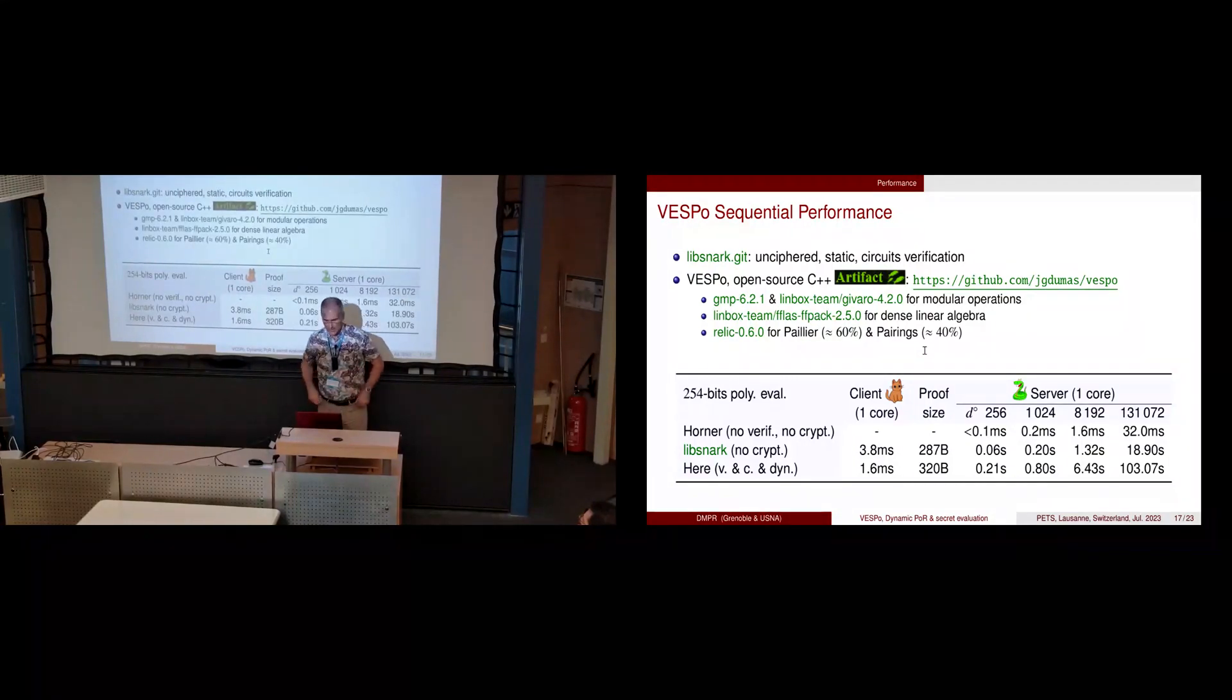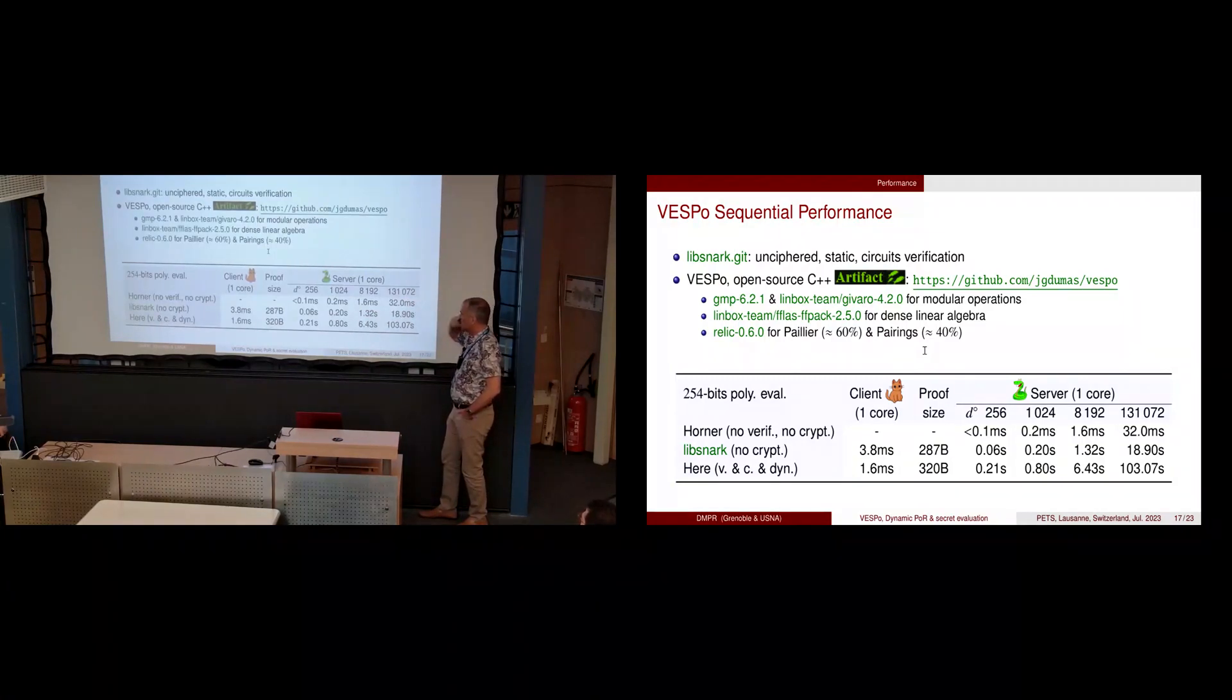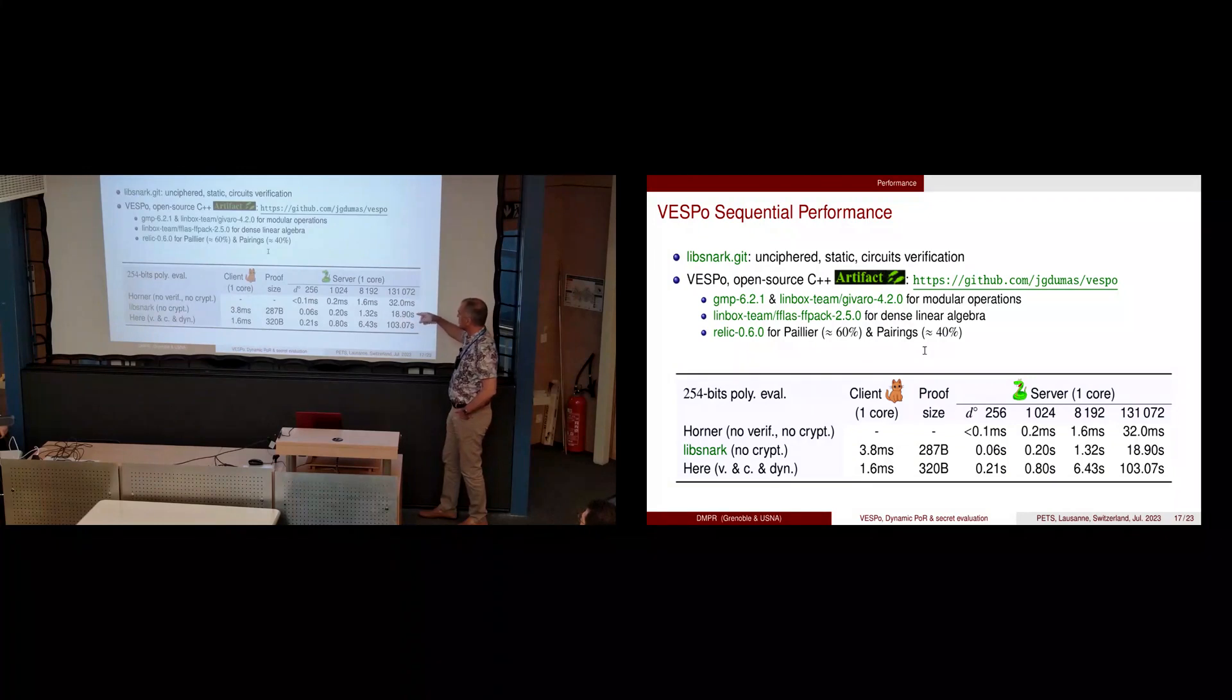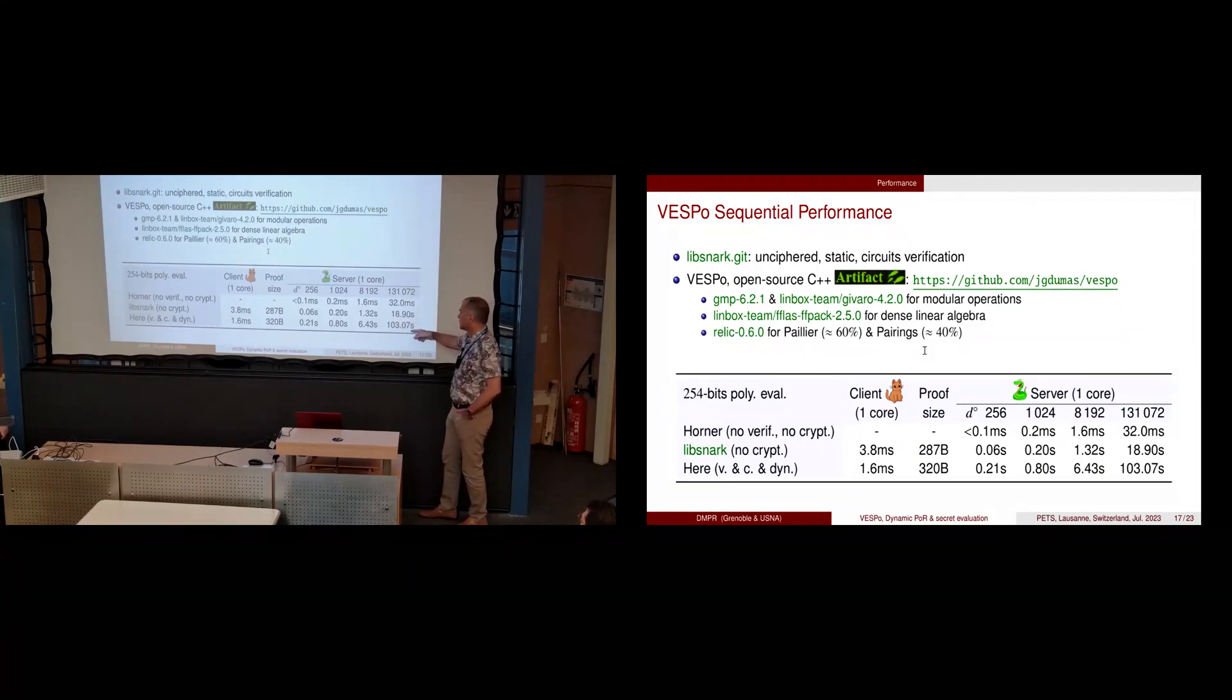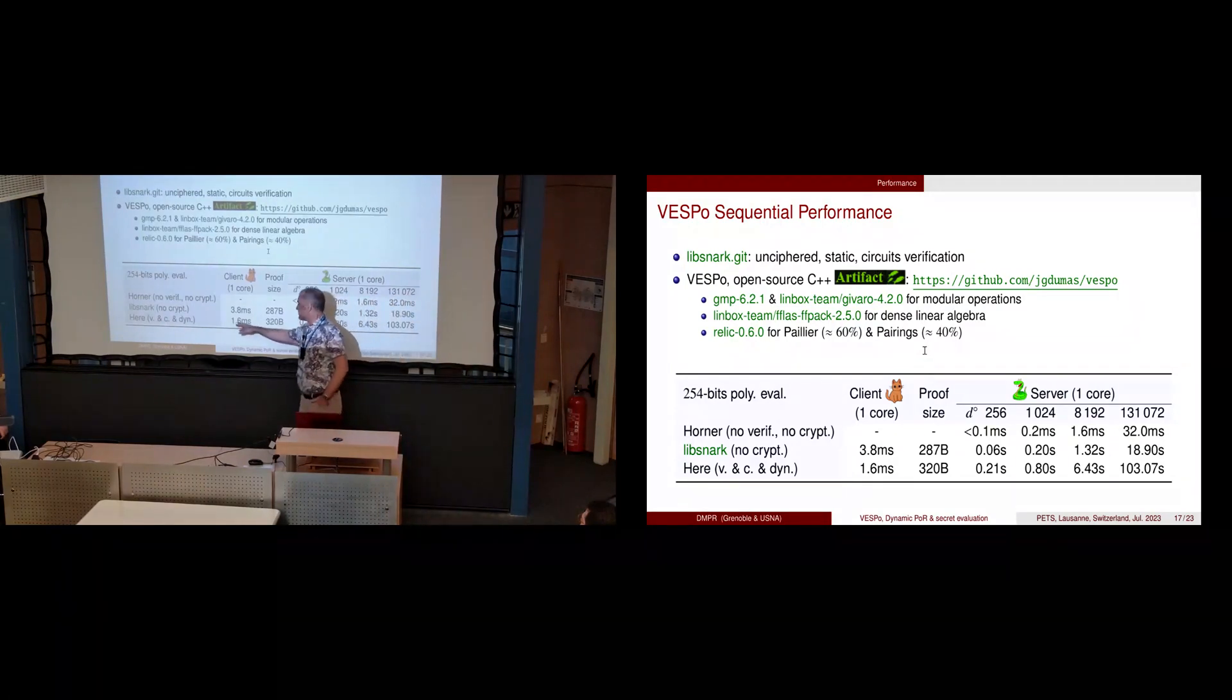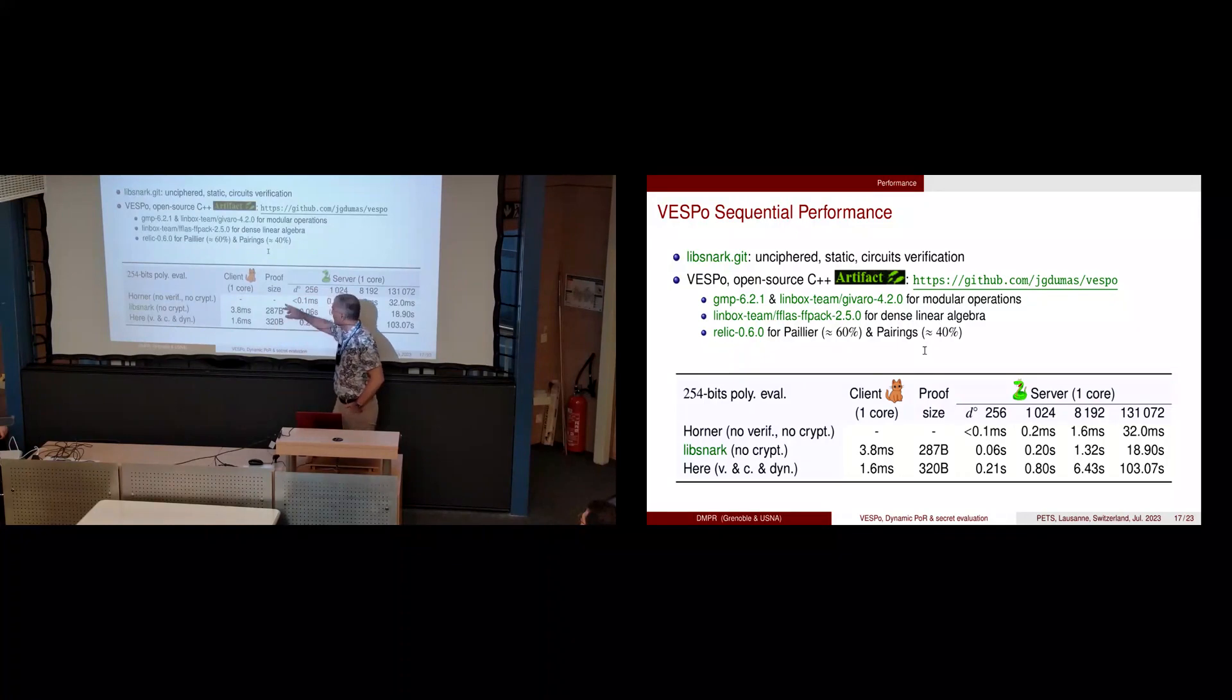Here is a sequential performance. We compare our evaluation to pure evaluation when nothing is ciphered, nothing is verified, nothing is encrypted, with libSNARK where we verify the circuit but it's not encrypted, and our solution where it's encrypted, verified, and dynamic. Of course it's slower on the server, but on the client side this is pretty fast—faster than SNARKs—and the proof size is pretty small.